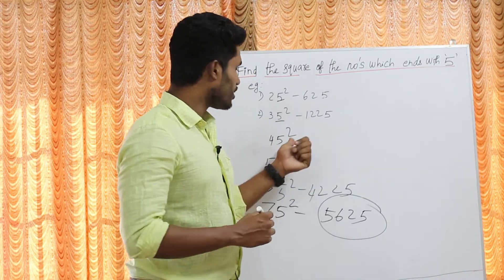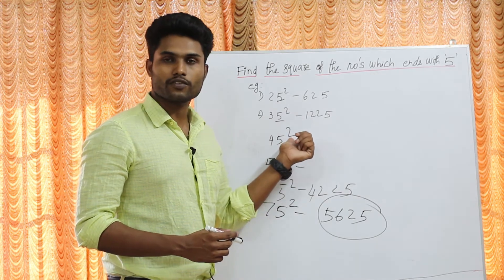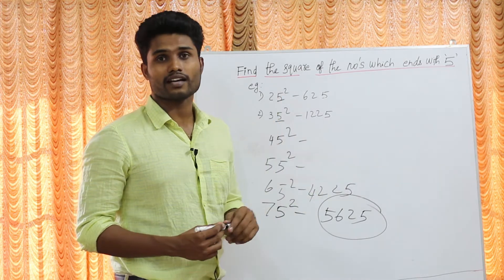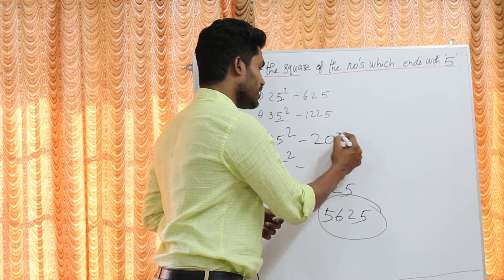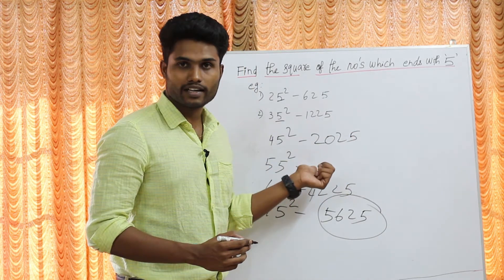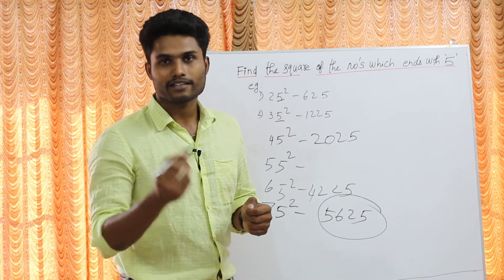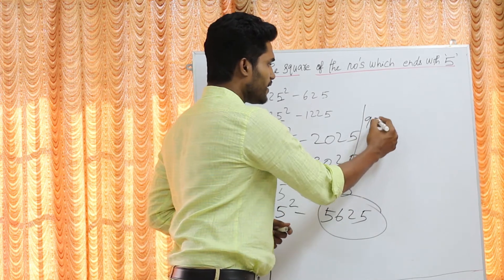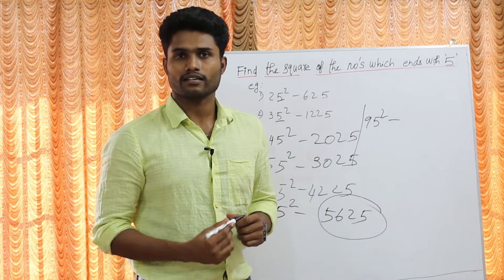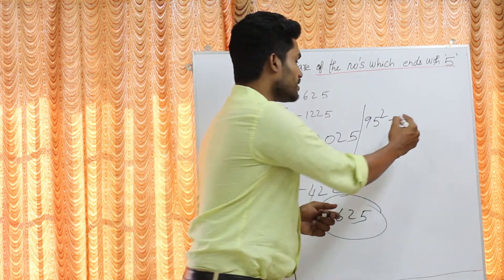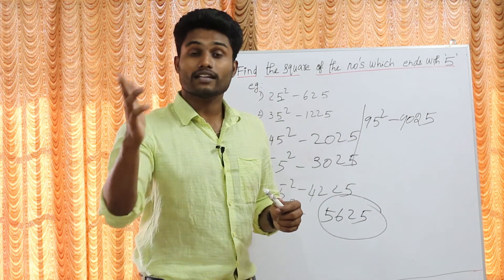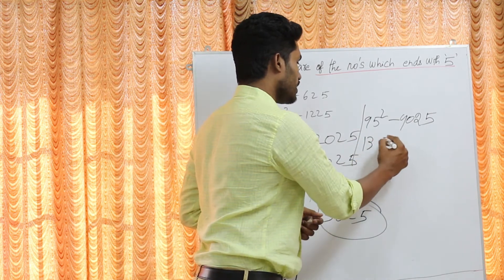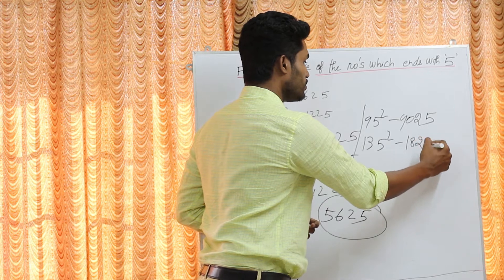Let's do more examples. 45 square: don't write 45 into 45. Take 4, next number is 5, so 4 into 5 is 20 — answer is 2025. 55 square: 5 into 6 is 30 — answer is 3025. 95 square: the next number after 9 is 10, so 9 into 10 is 90 — answer is 9025. 135 square: 13 into 14 is 182 — answer is 18225.